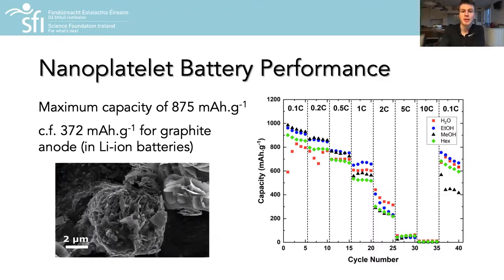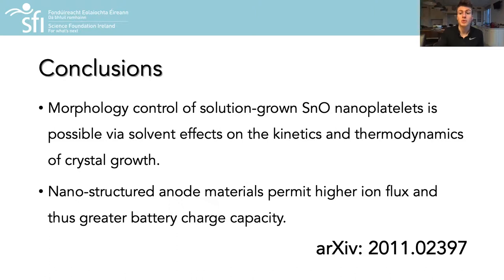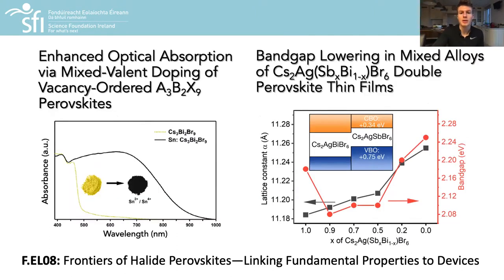Even upon cycling the nanostructured tin monoxide anodes at harsh conditions of 1C, all anodes maintain a capacity greater than 400 mAh per gram for the first 50 cycles. To end, I'd like to thank everyone who contributed to this work and ask that you check it out on archive. If you are interested, please check out my work on perovskite-inspired materials from the EL08 symposium. Thank you very much for your time and attention.